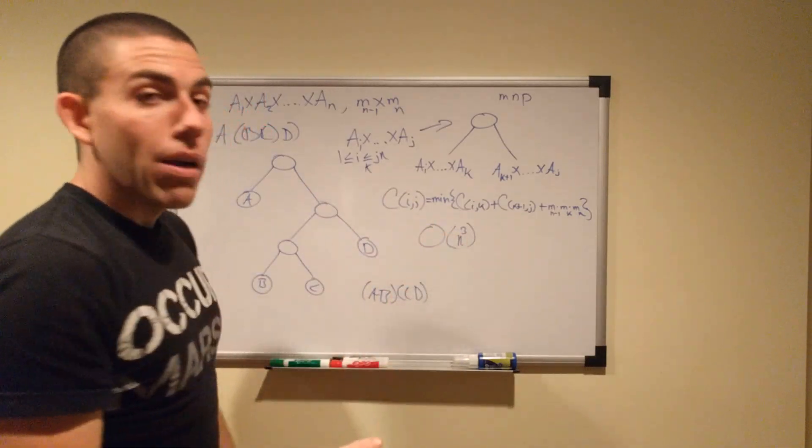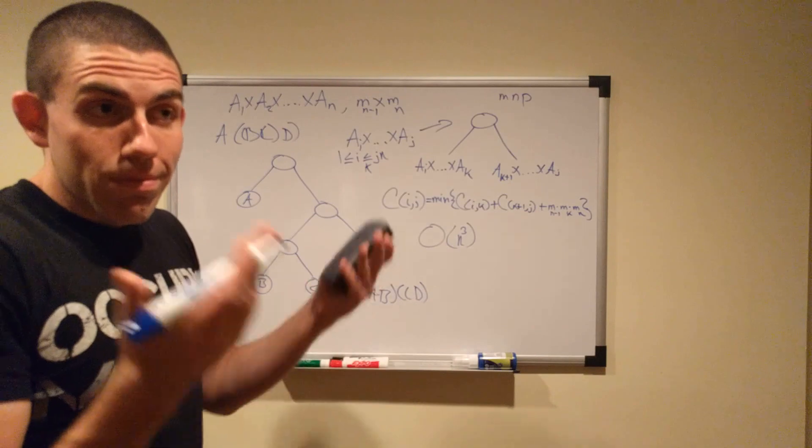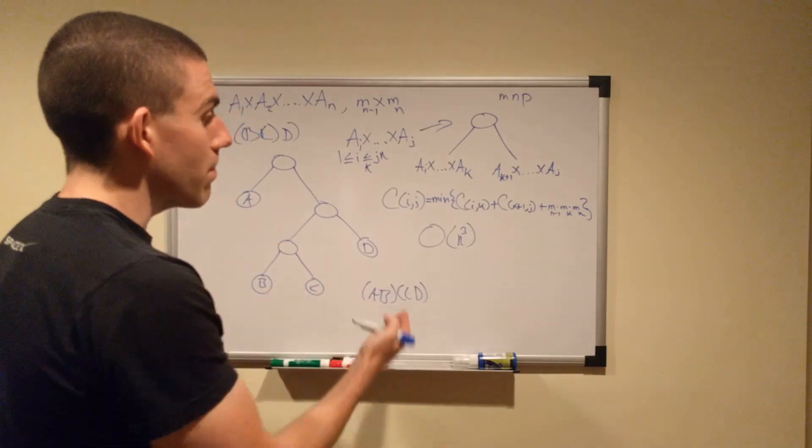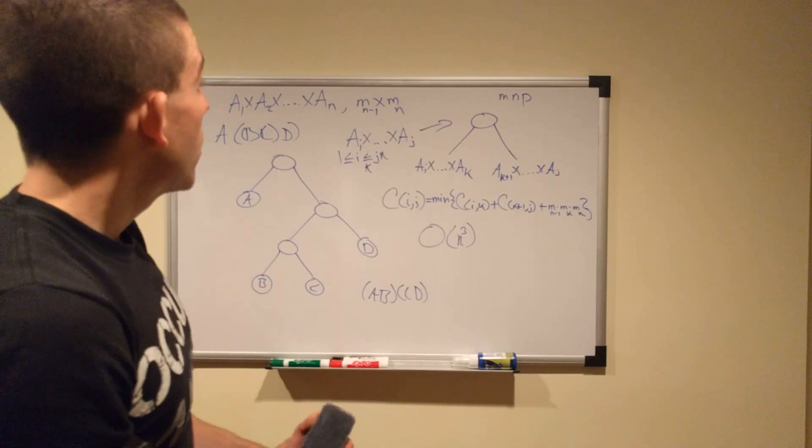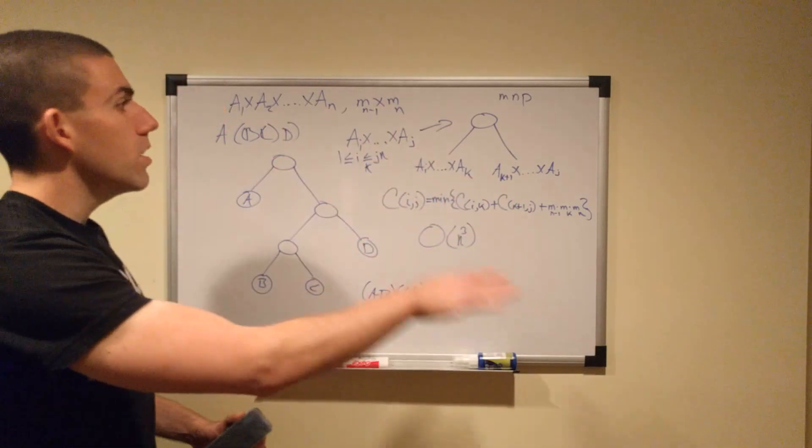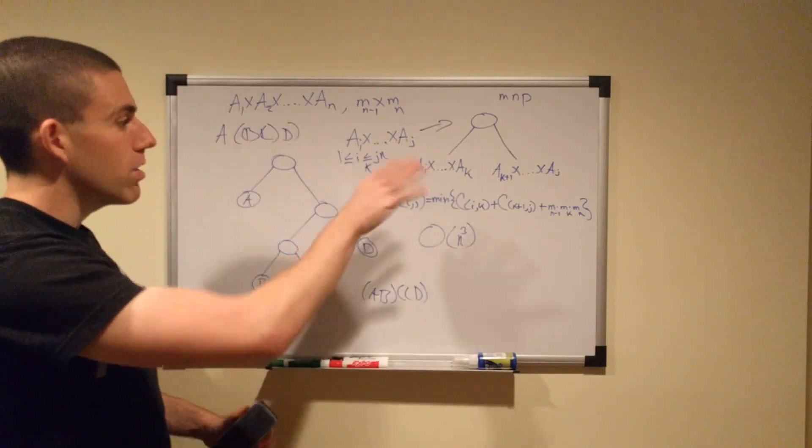This equation allows us to solve the problem with an upper bound of n cubed, which is pretty astonishingly fast, considering how big this problem is. We have a guaranteed upper bound of n cubed. It's still not very fast, but it's extraordinarily fast compared to the alternative. So yeah, that'll do it for the theory, for the algorithm of exactly why it works and how it works.